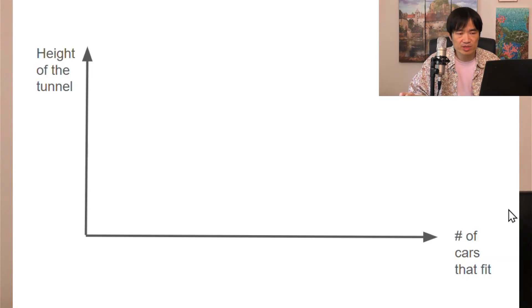Let's first start from a completely unrelated example. So let's say someone is designing a tunnel and they try to figure out how high the tunnel should be. So the vertical axis is the height of the tunnel and the horizontal axis is the number of cars that can fit in the tunnel. So how do we draw the curve?